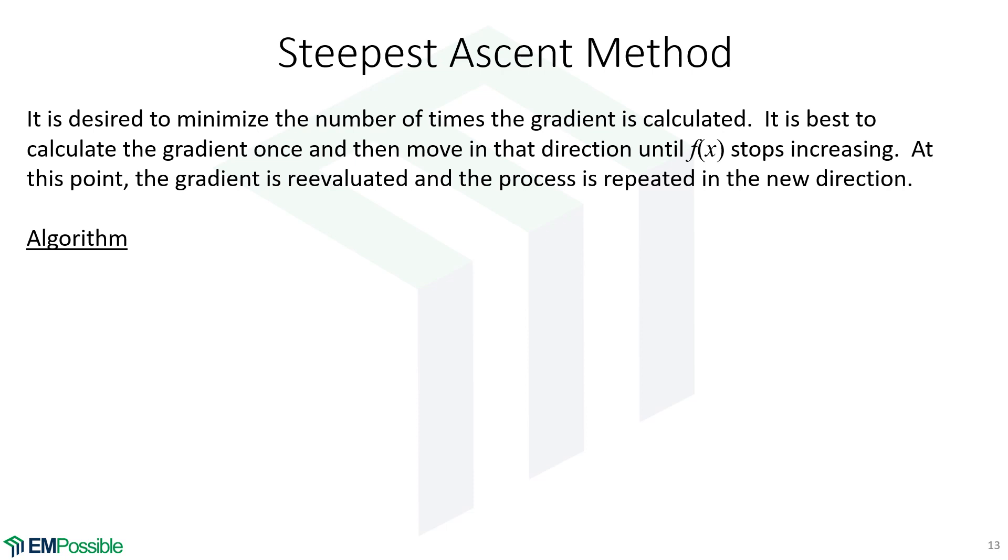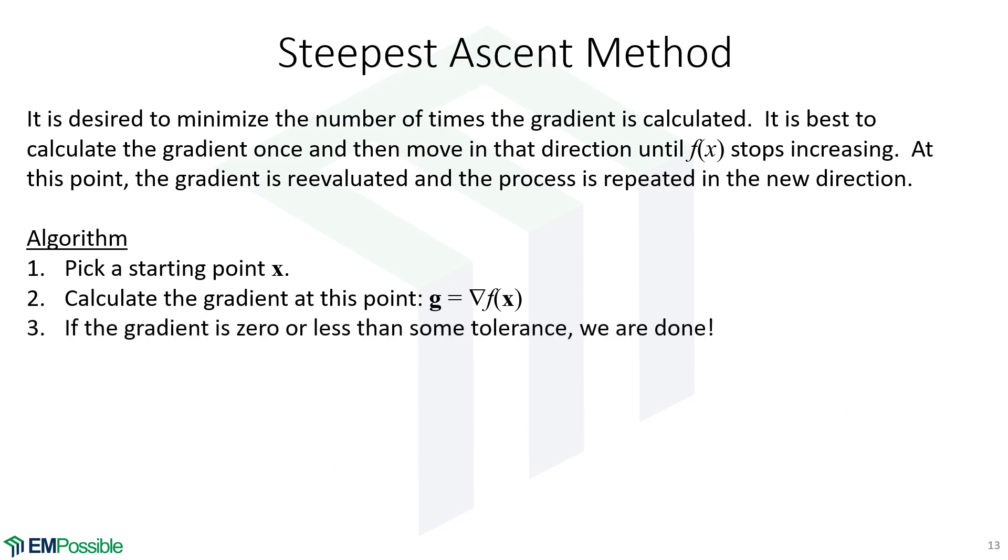So the algorithm we discussed goes something like this. We'll pick a starting point x. We'll calculate the gradient at that starting point, call that gradient g. If that gradient is zero, we can say that we're done, or even less than some kind of tolerance, we can say that we're done.